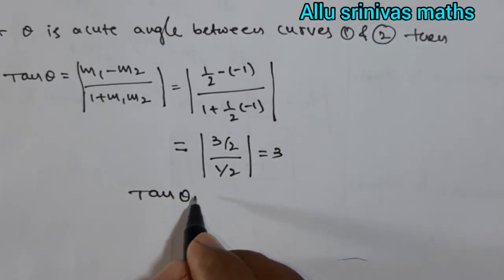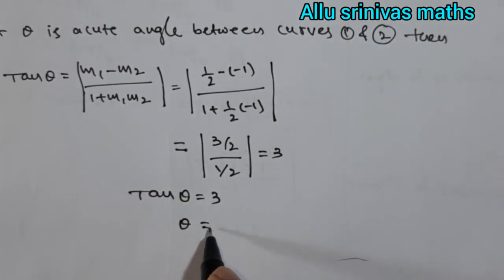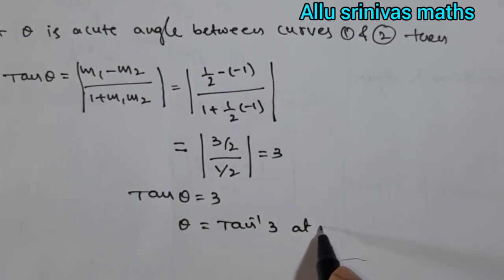Tan θ = 3. θ = tan⁻¹(3) at point (2, 2). This is the acute angle between two curves at (2, 2).